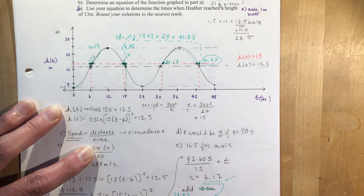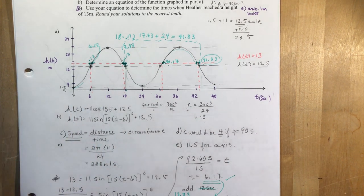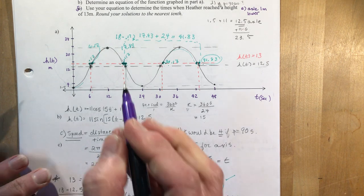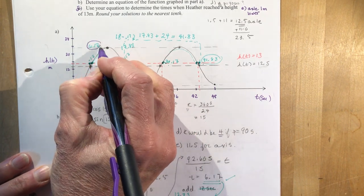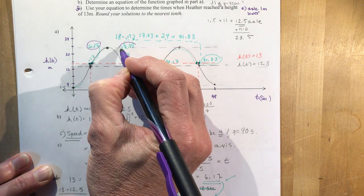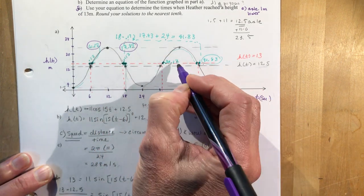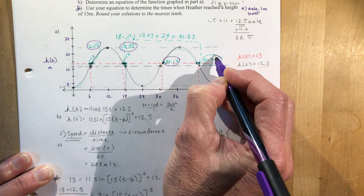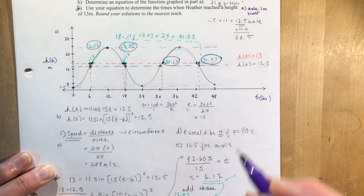Finally, the four times where she will have a height of 13 meters are 6.17, 17.83, 30.17 seconds, and 41.83 seconds.